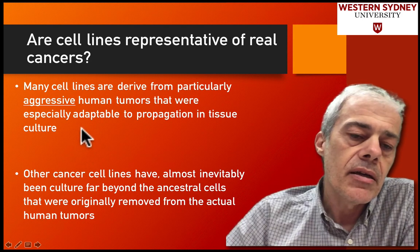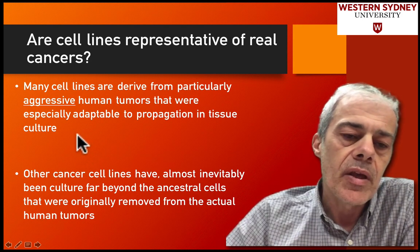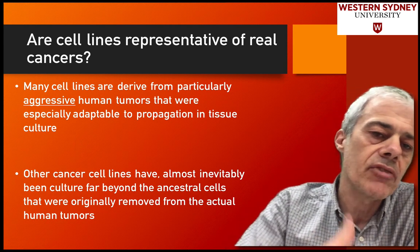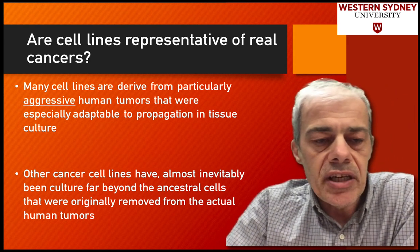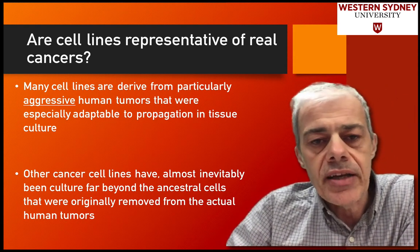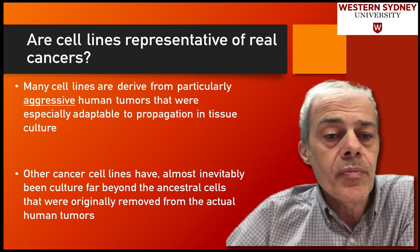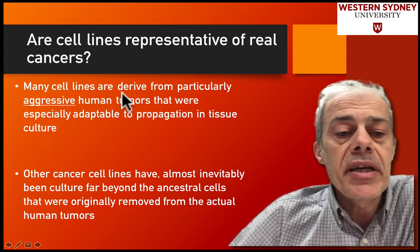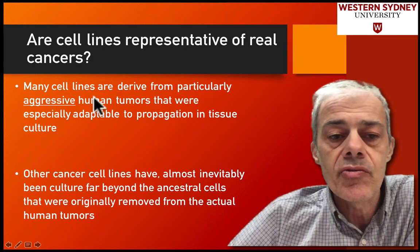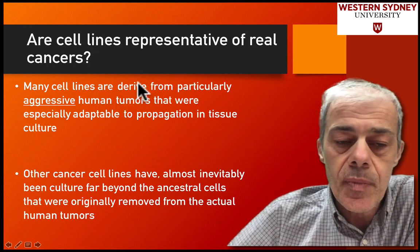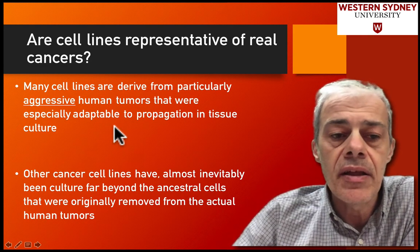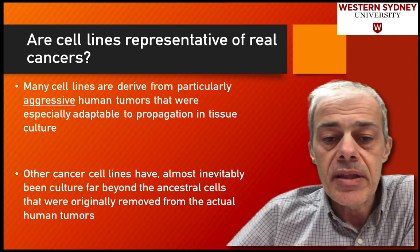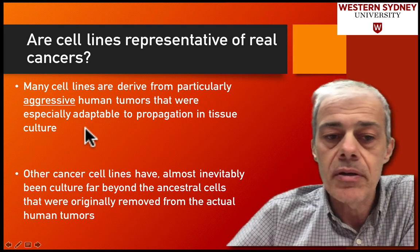Another important question is whether studies in cell lines will translate to the whole organism. These cell lines are derived from tumours, which sounds good, but typically they're derived from more aggressive tumours rather than early-stage tumours — that's just the nature of making a cell line. Therefore, it may not be a good model for the early-stage development of that tumour.